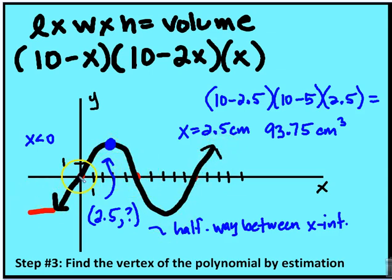We know that the values of x have to be in between 0 and 5 because when they are less than 0, we end up with values for volume which are negative. In this section here, we end up with values of x for the volume that are also going to be negative, at least for a length or a width.